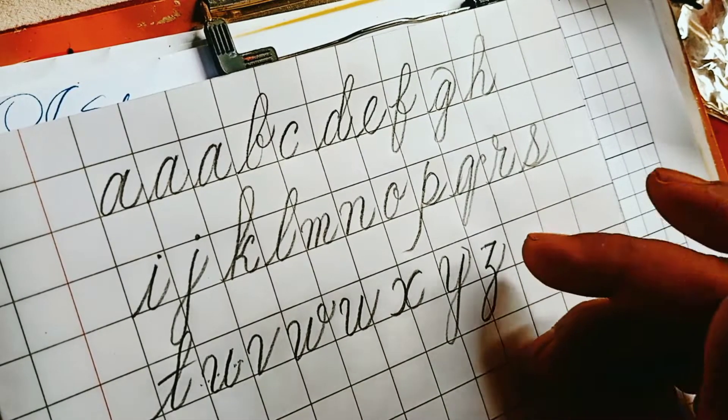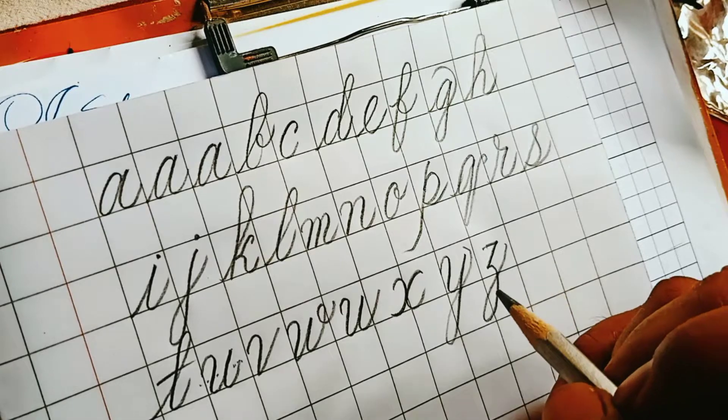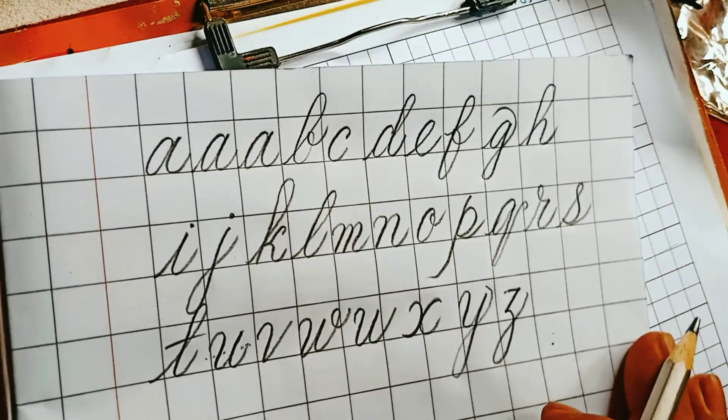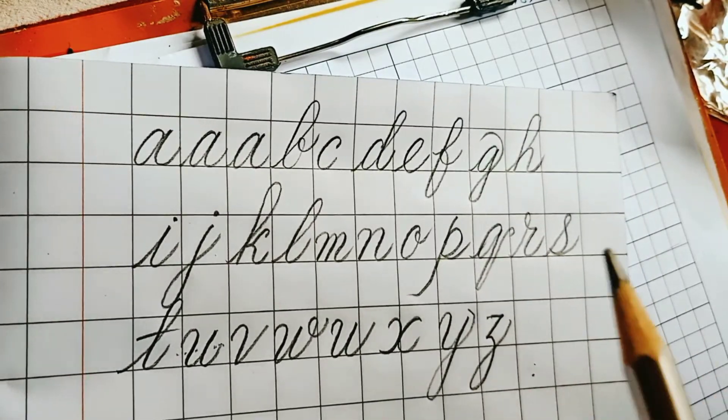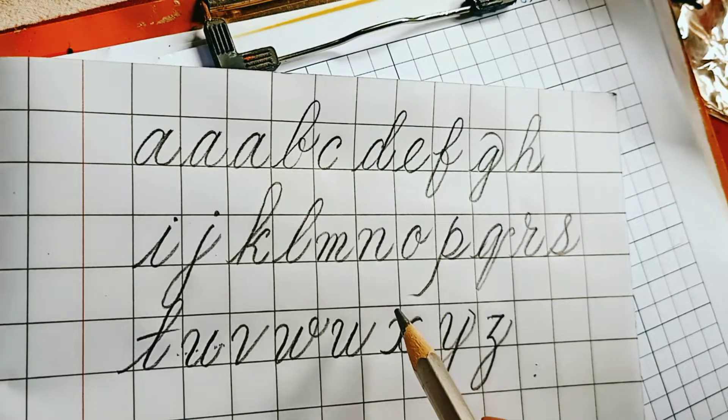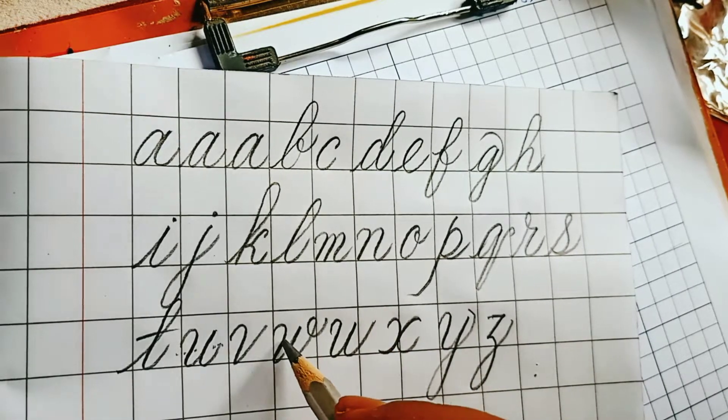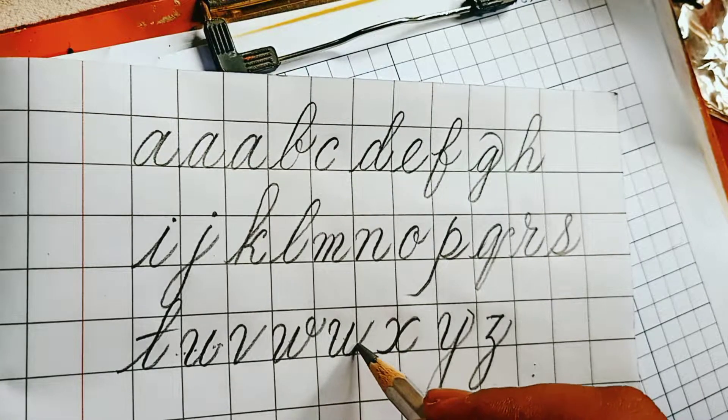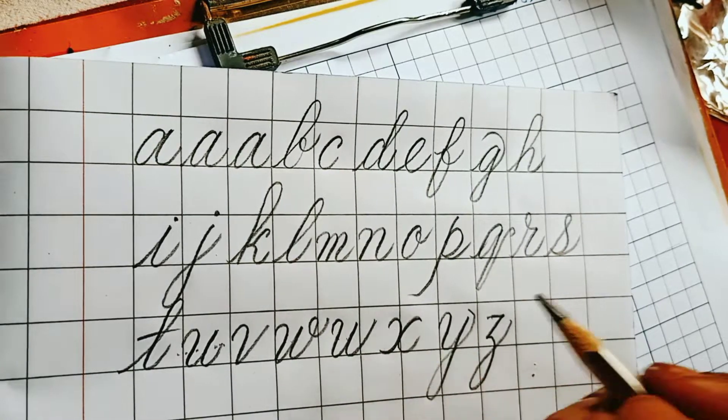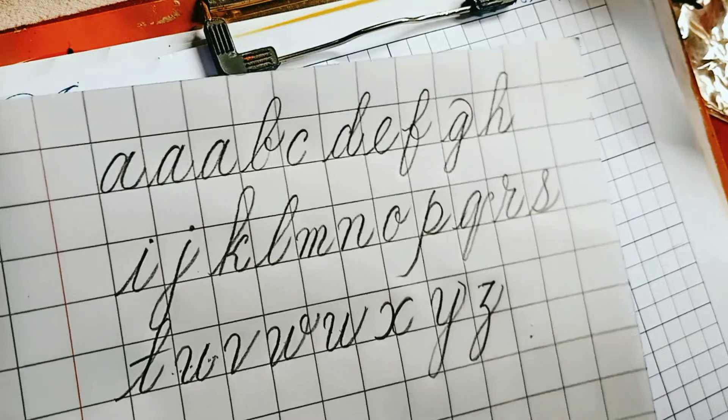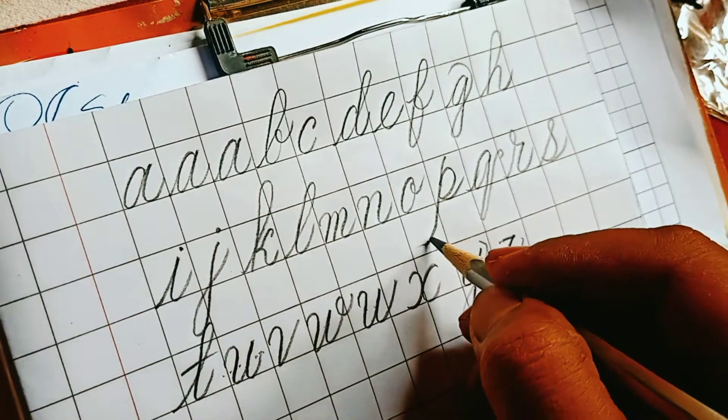These are the simple alphabets, the small letters I have written. On my next video I will write the capital letters. As you can see, in this W, we have to maintain these gaps. First when you write, the gaps will not be okay, but with gradual practice it will go correct. So this way you can learn.